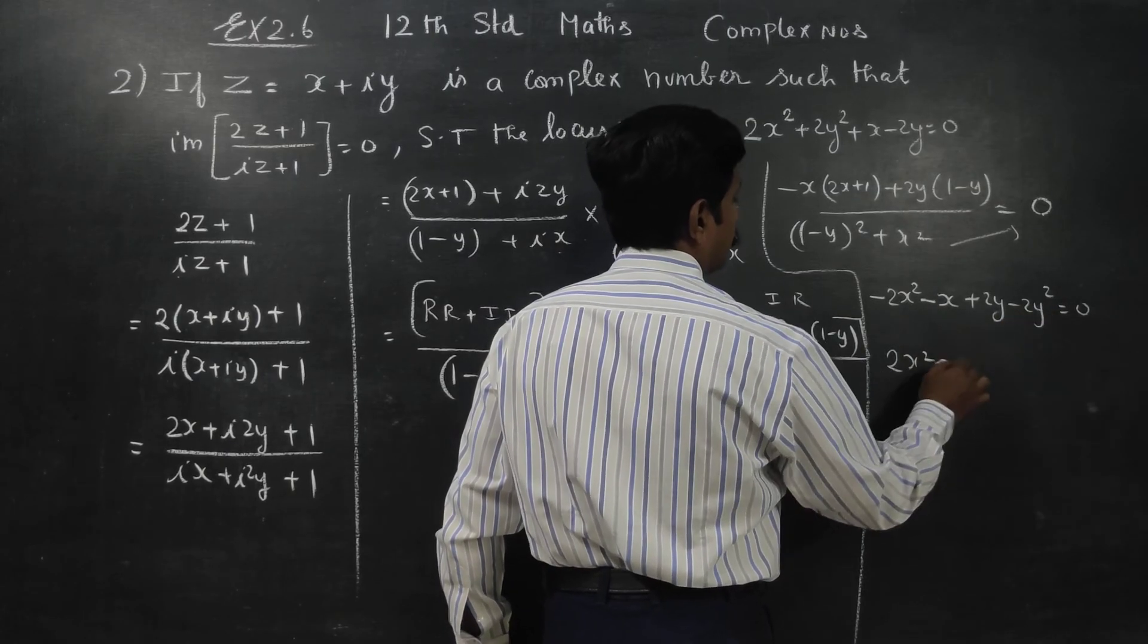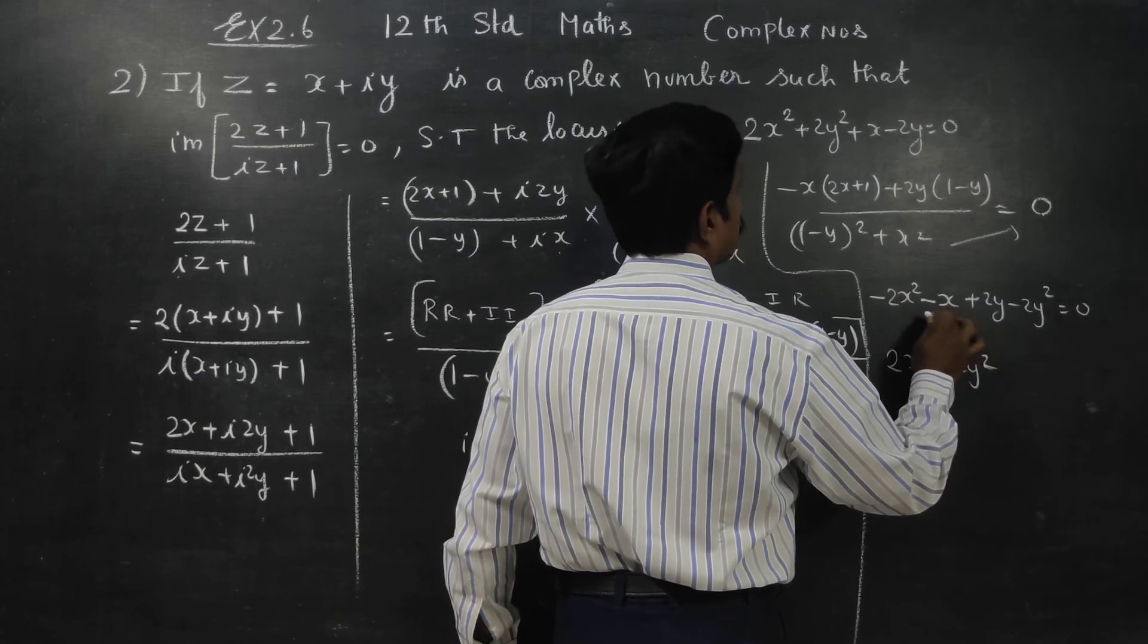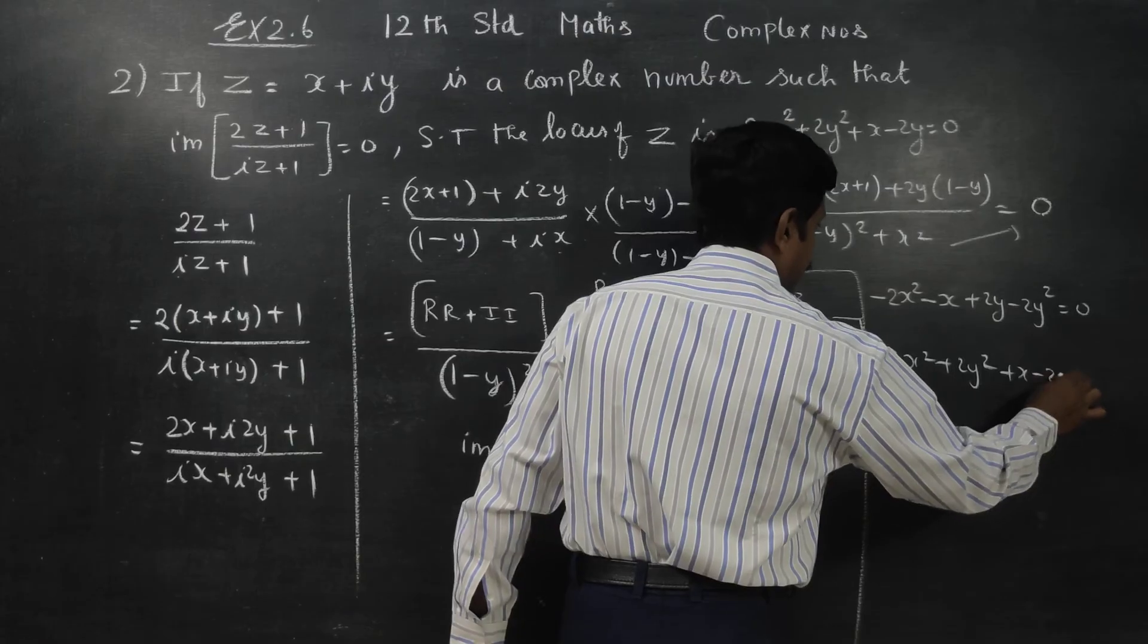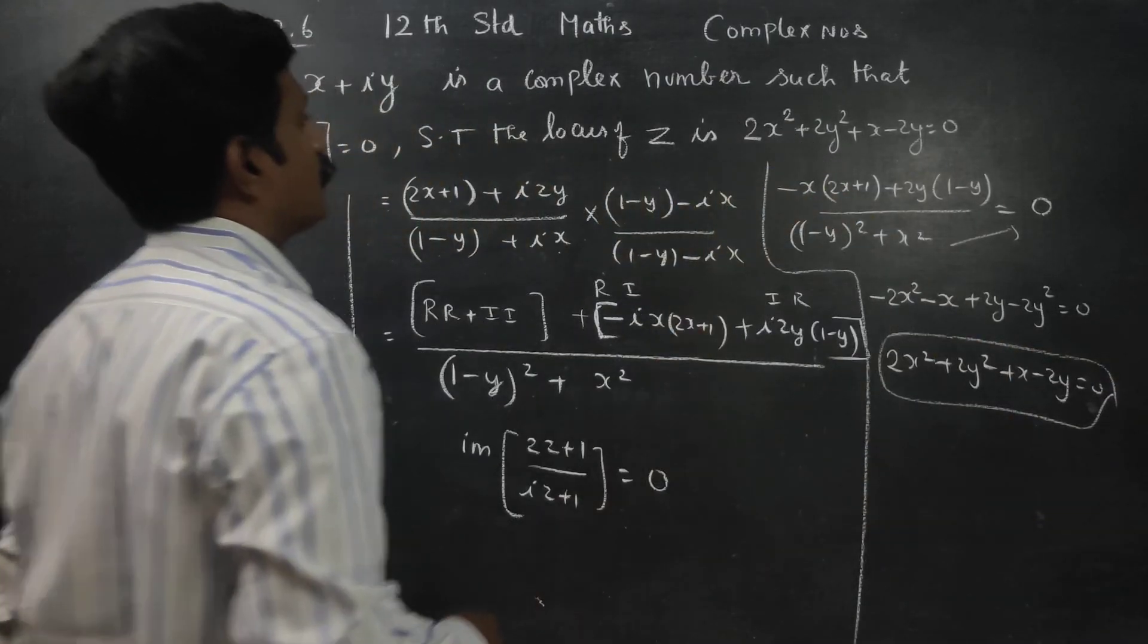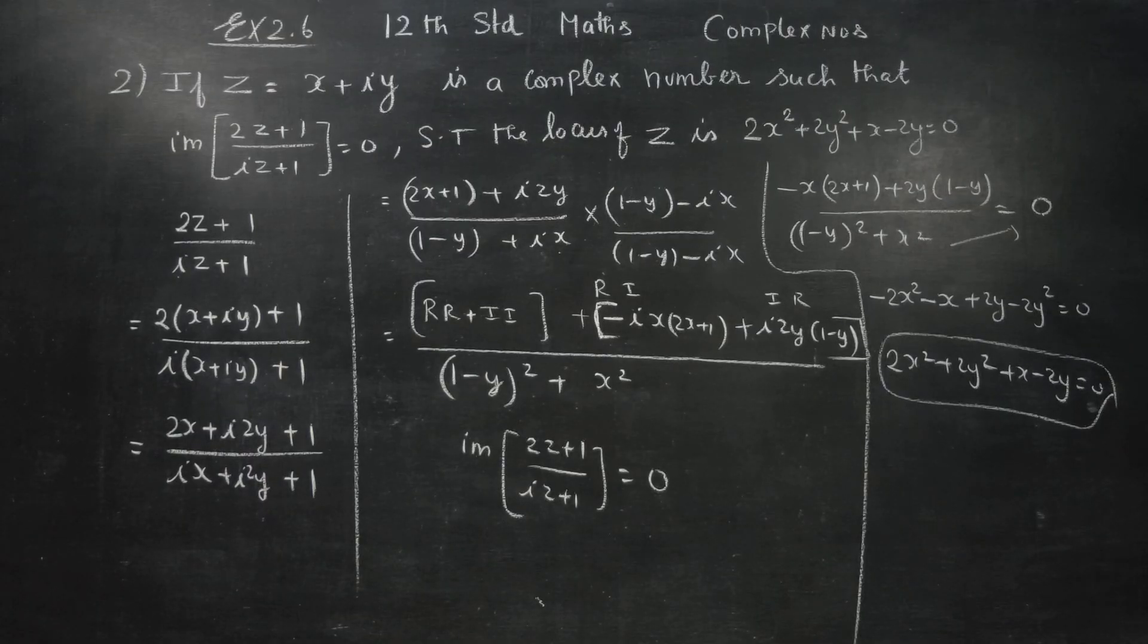minus x square minus x plus 2y square plus x minus 2y is equal to 0. This is the proof of z is 2x square plus 2y square plus x minus 2y is equal to 0. Thank you.